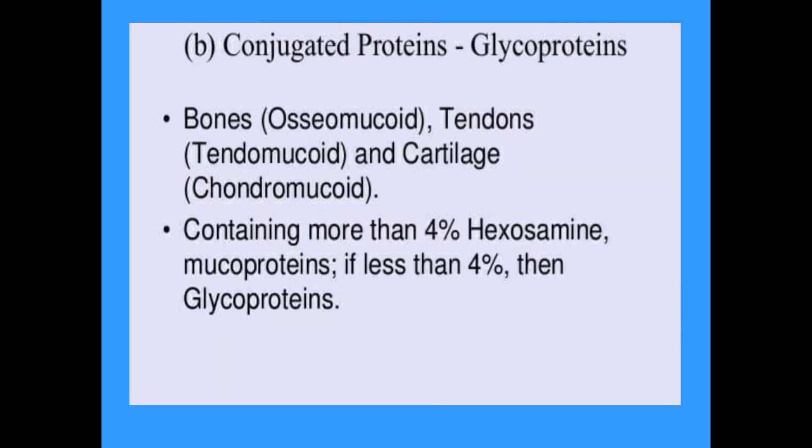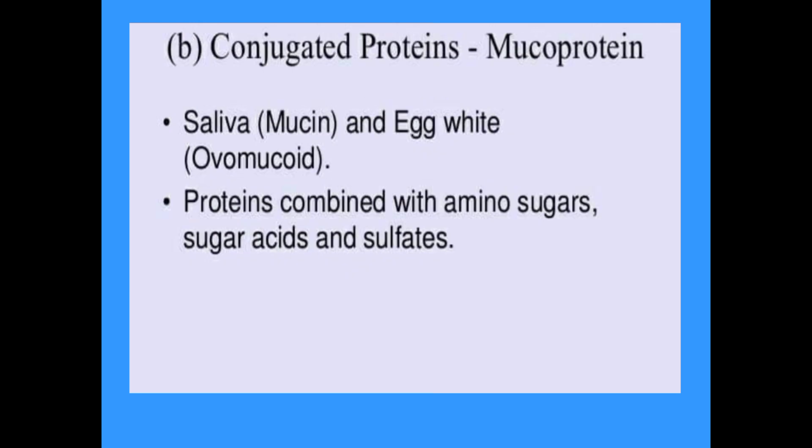Conjugated proteins may also be glycoproteins, made up of glycogen and proteins. They are found in bones (osteomucoid), tendons (tendomucoid), and cartilage (chondromucoid). Mucoproteins contain more than four percent hexosamine, while glycoproteins contain less than four percent. Mucoproteins are found in saliva, and examples such as ovomucoid are found in egg white. These proteins are combined with amino sugars, sugar acids, and sulfates.